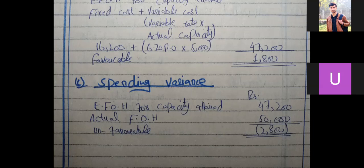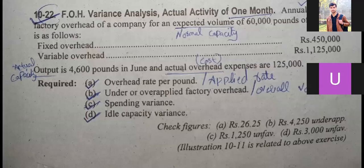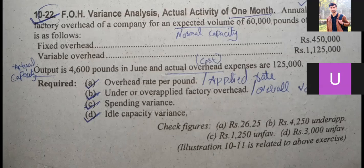This is problem 22. Annual estimated factory overhead for a company for an expected volume of 60,000 pounds of a product is as follows. Normal capacity is 60,000 pounds. Fixed overhead is Rs. 4,50,000. Variable overhead is Rs. 11,25,000. Output in June is 4,600 pounds, and actual overhead expenses are Rs. 1,25,000.